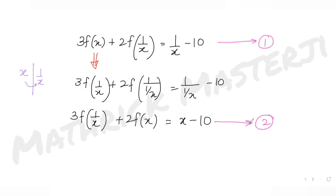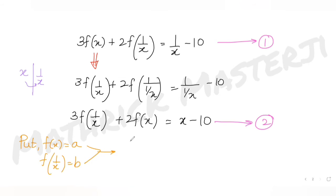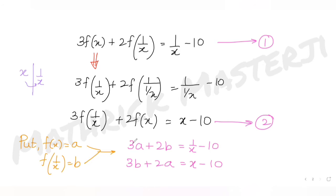Before adding the two equations, let's make substitutions: let f(x) = a and f(1/x) = b. Then equation 3 becomes 3a + 2b = 1/x - 10, and equation 4 becomes 3b + 2a = x - 10.